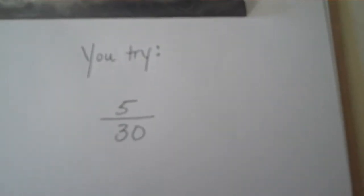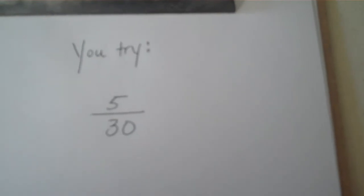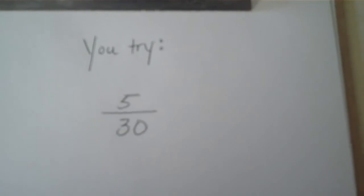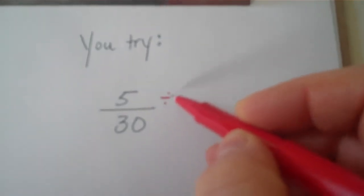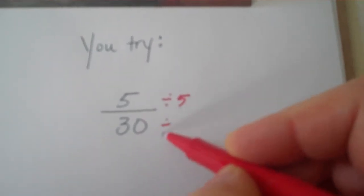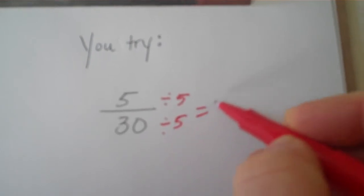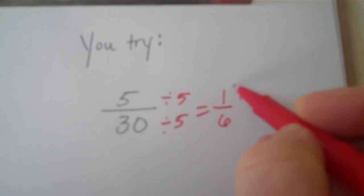Simplify the fraction 5 thirtieths. That's right. You can divide 5 by 5, and you can also divide 30 by 5, so your answer should be 1 sixth.